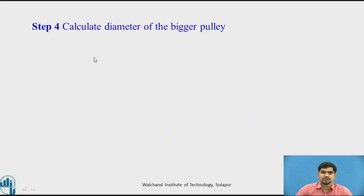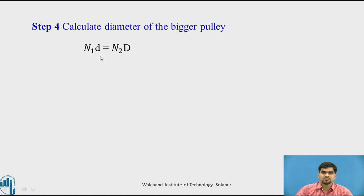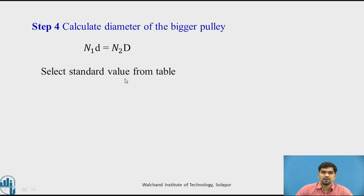Step 4: Calculate the diameter of the bigger pulley. Using the equation for the larger pulley diameter D — knowing the input speed, output speed, and the recommended diameter of the smaller pulley — we calculate D. Once we get D, we select its value from the standard data book.